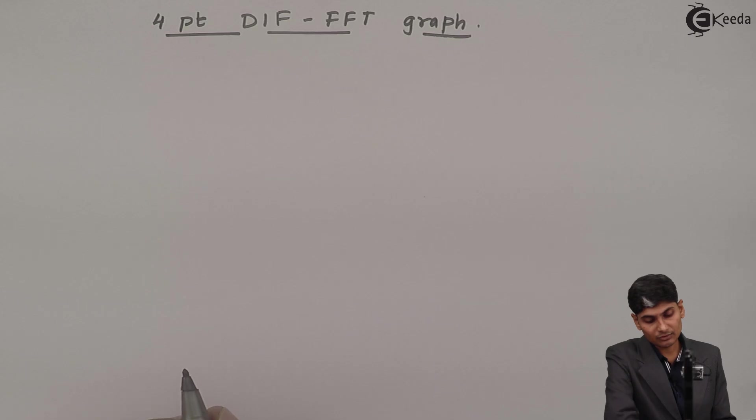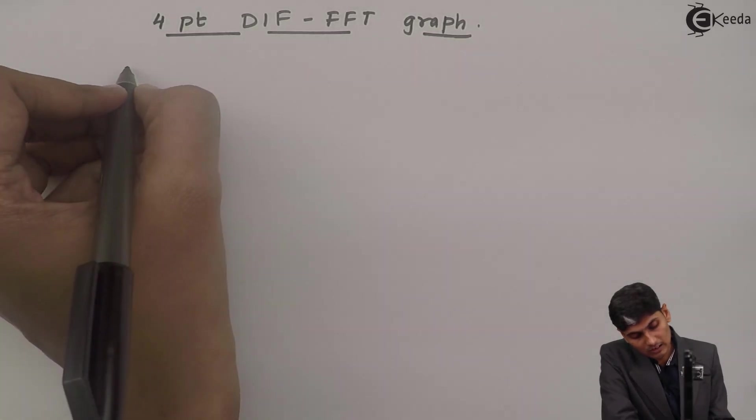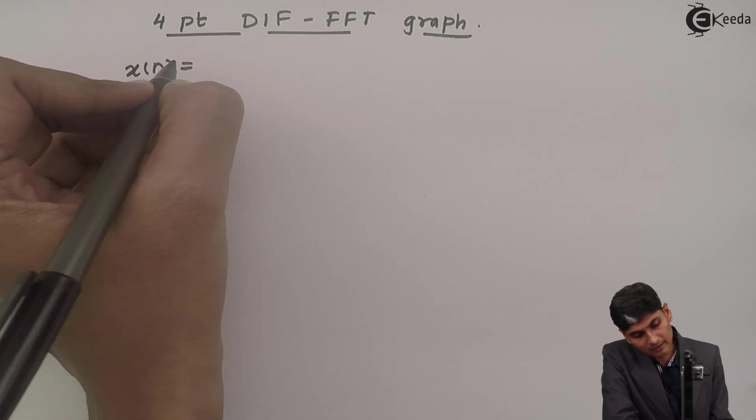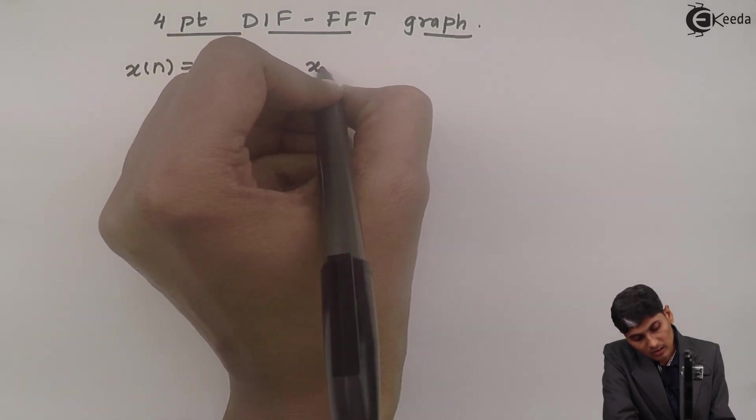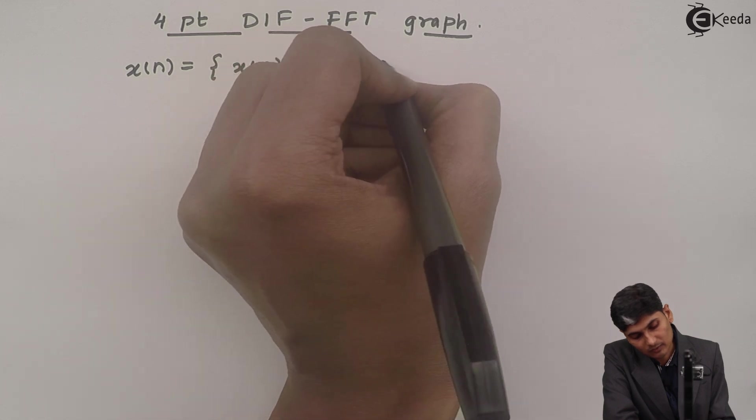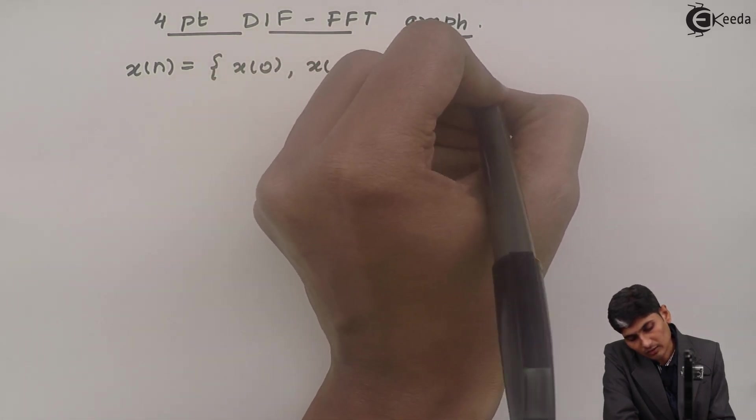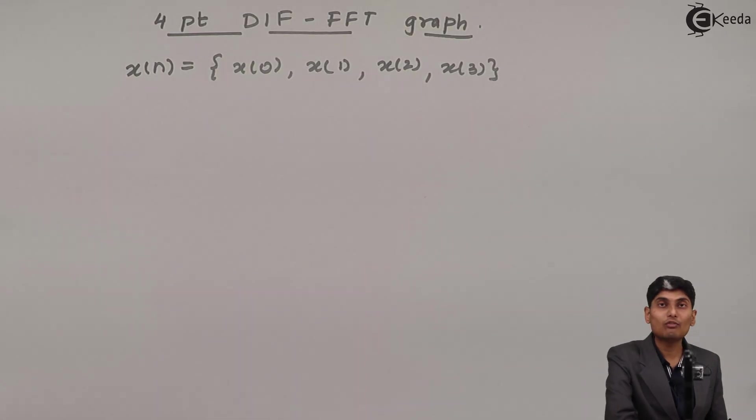So for the decimation in frequency flow graph, let us say that I have x of n as x of 0, x of 1, x of 2 and x of 3. I have 4 sample values at n equals 0, 1, 2 and 3.